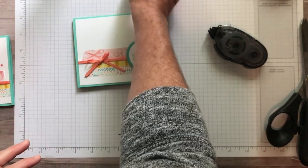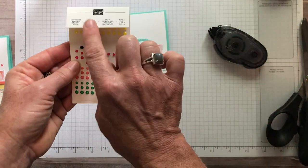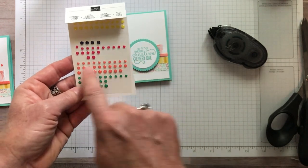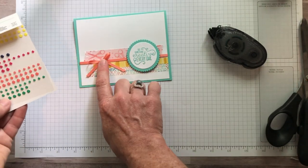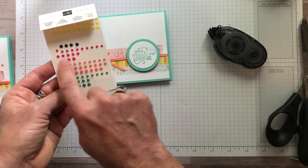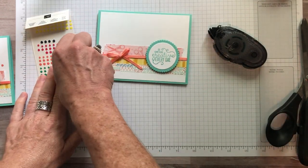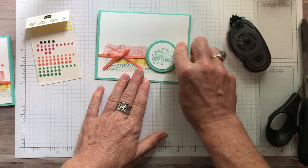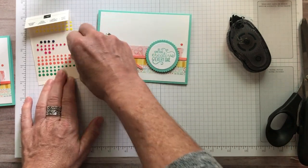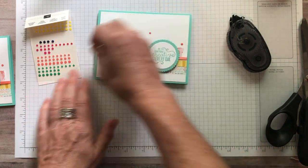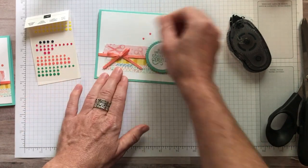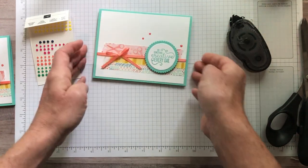One last step, I have my Happiness Blooms enamel dots. In keeping with me using my Grapefruit Grove color, I pulled the Grapefruit Grove little enamel dots off of here. I am just going to grab and pop a couple of these. We're going to put one there and then one teeny tiny, maybe one right about there. And that is it.